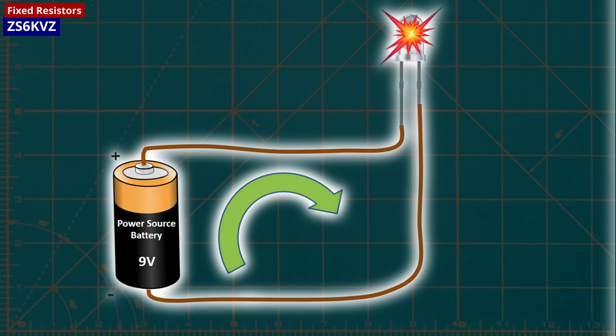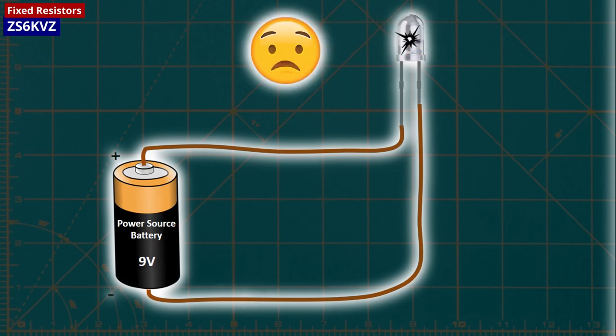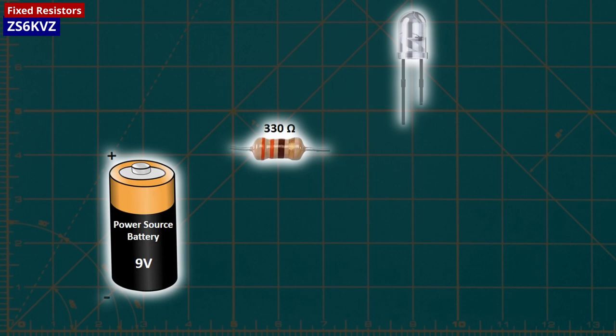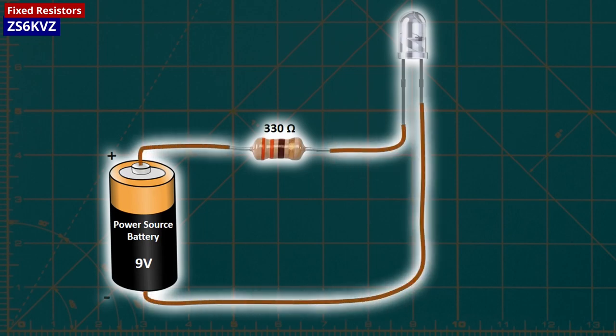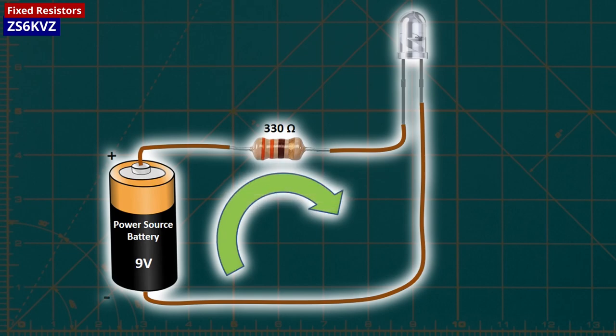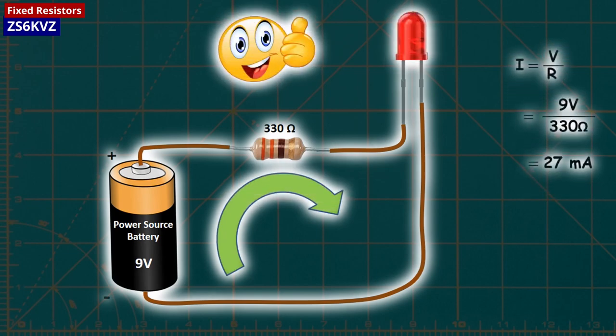This is because for an LED to work correctly, the current flowing through it must be between 15 and 30 milliampers. However, if we connect the LED to the source with a 330 ohms resistance, the LED will light up for a long time without any damage, as the current flowing through the circuit will be around 27 milliampers.